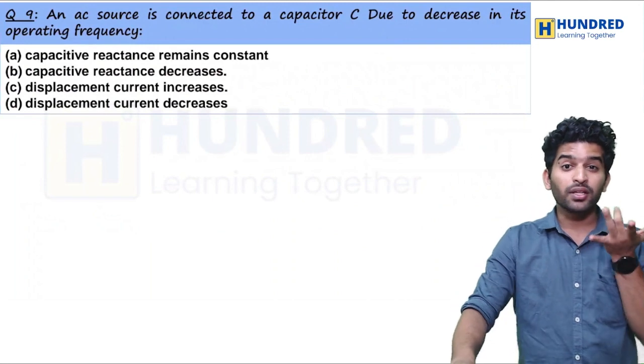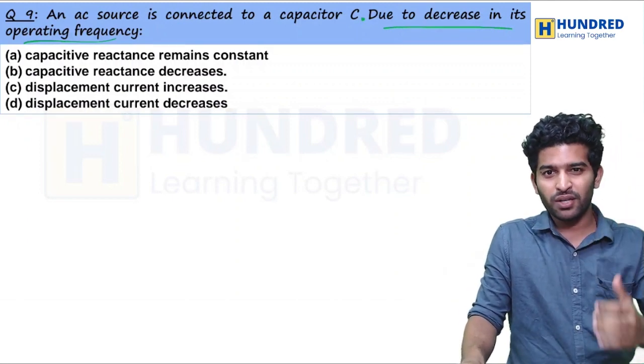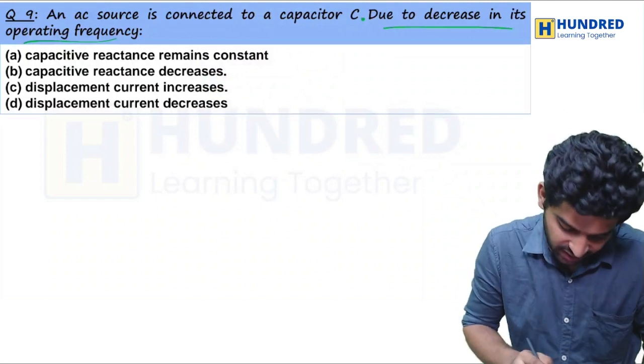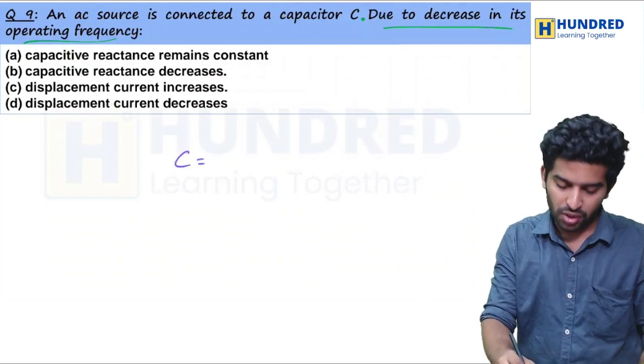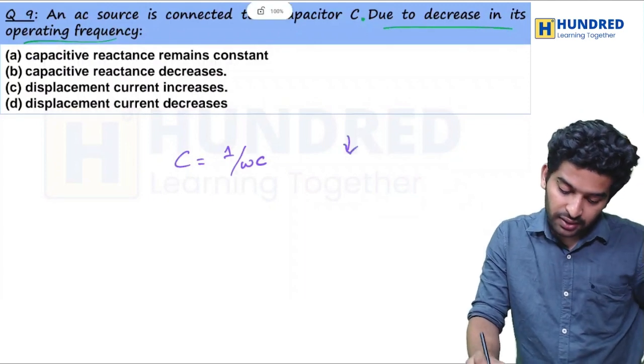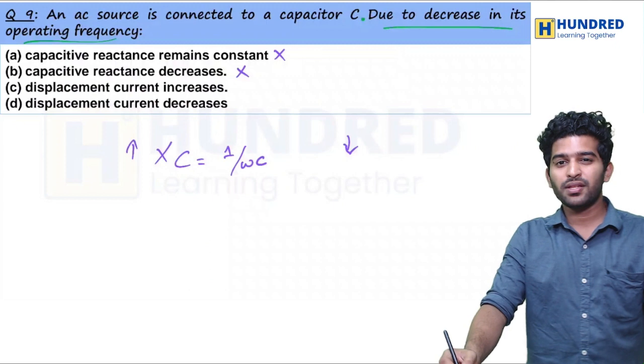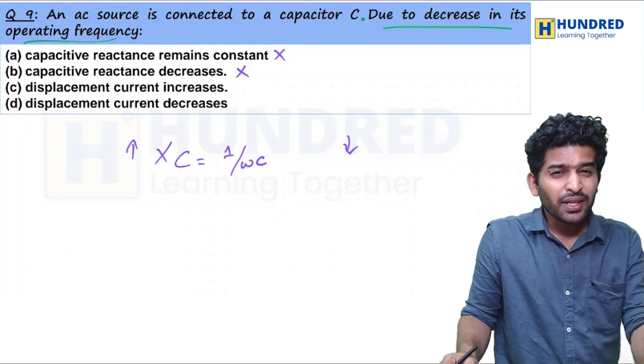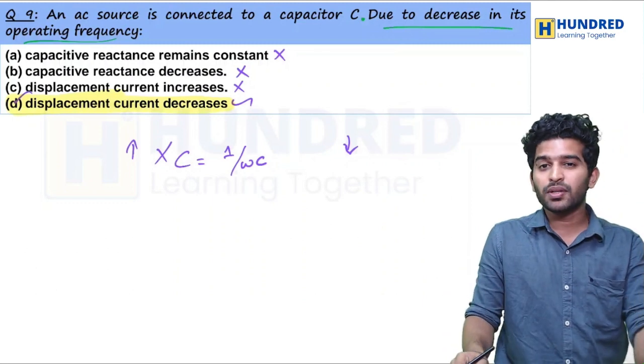An AC source is connected to a capacitor C. Due to the decrease in its operating frequency, what will happen? For a capacitor, the reactance is 1 by omega C. If there is a decrease in the operating frequency, the reactance will increase. Reactance is inversely proportional to frequency. If frequency decreases, reactance increases. Displacement current is increased.